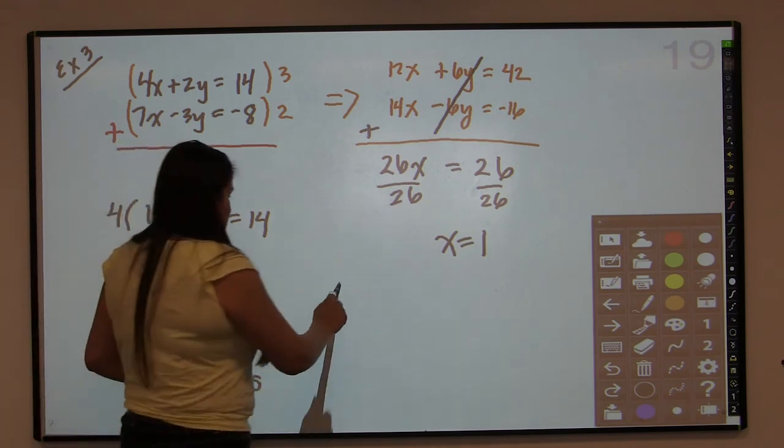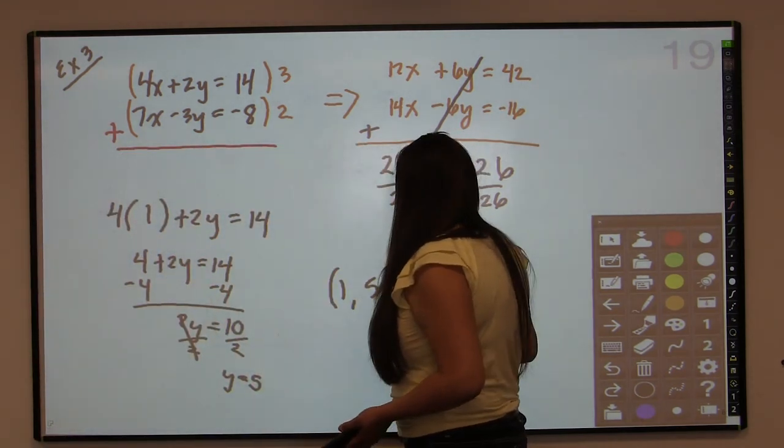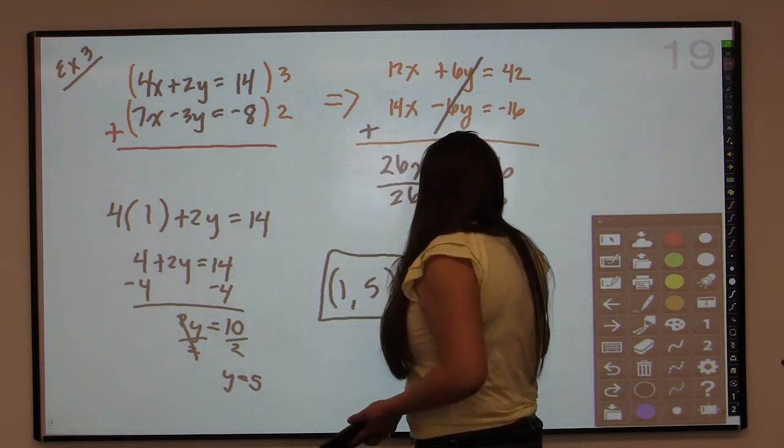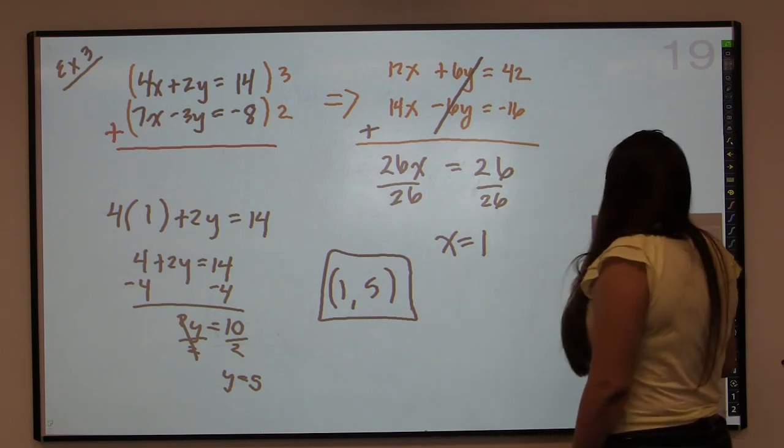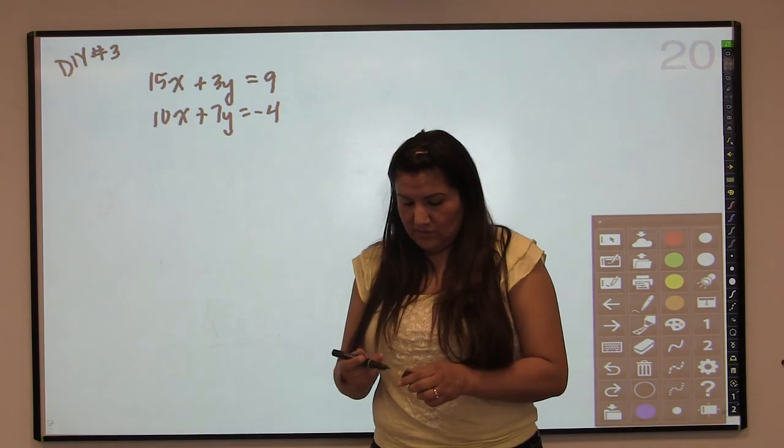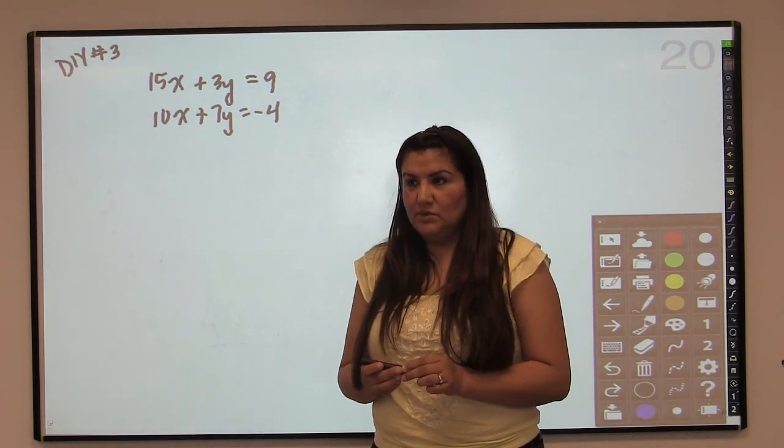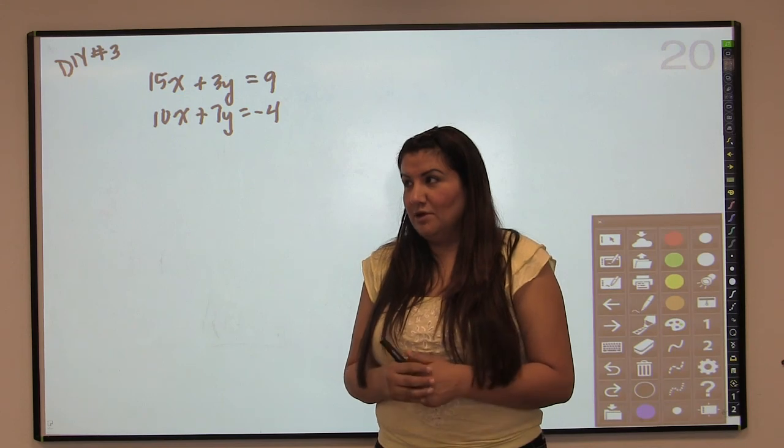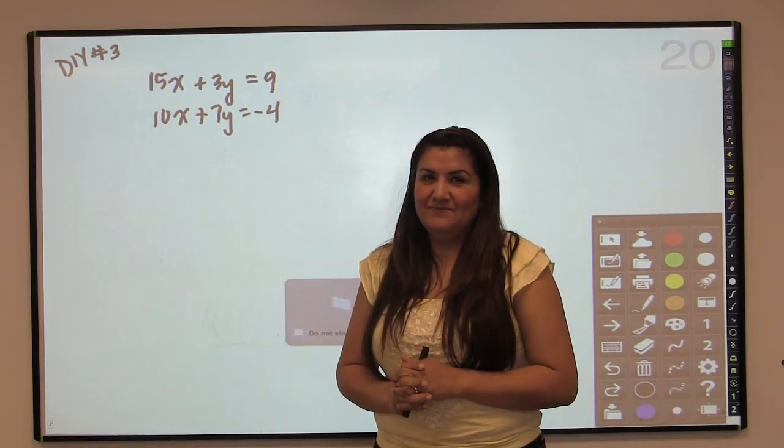And again, x goes first, y goes second. So my solution is 1, 5. And that is an example of where you have to multiply both equations. So now you can try this one on your own. And once you've done that, you have completed the exercises for this video. And that's where Gavin's supposed to turn it off. Happy studying.